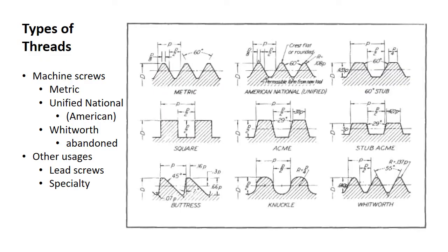Now the type of thread — that's an interesting part. You can get metric screws; they all have 60-degree angles. There are some other types of threads that created a real mess in World War II. The Whitworth was the standard in the UK with a 55-degree angle, while Americans used their 60-degree angle.